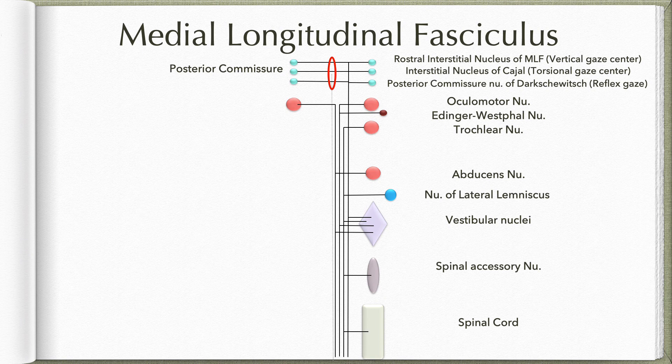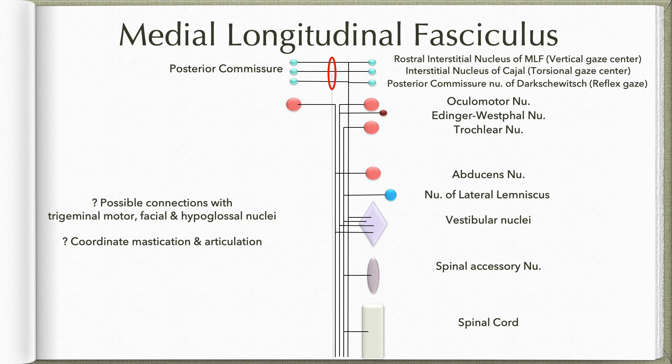There is a second set of motor nuclei which includes the motor nucleus of the trigeminal, the facial nucleus, and the hypoglossal nucleus. The trigeminal motor nucleus supplies the muscles of mastication, the facial nucleus supplies the muscles of facial expression, and the hypoglossal nucleus supplies the muscles of the tongue. These groups of muscles need to be coordinated during mastication and articulation, so these three nuclei may also interconnect with each other through the medial longitudinal fasciculus or an alternative pathway.